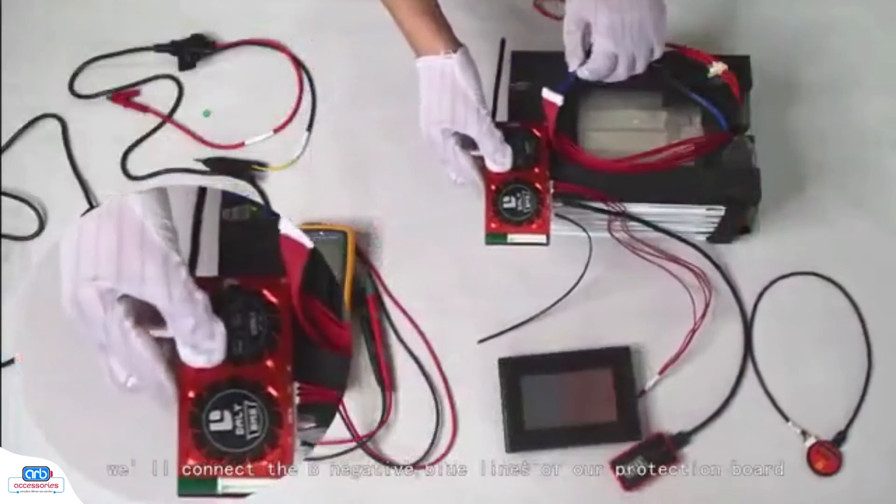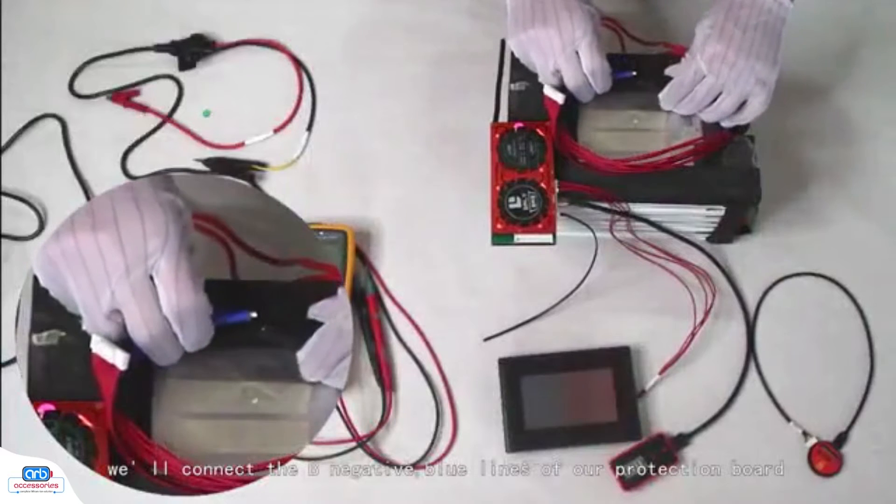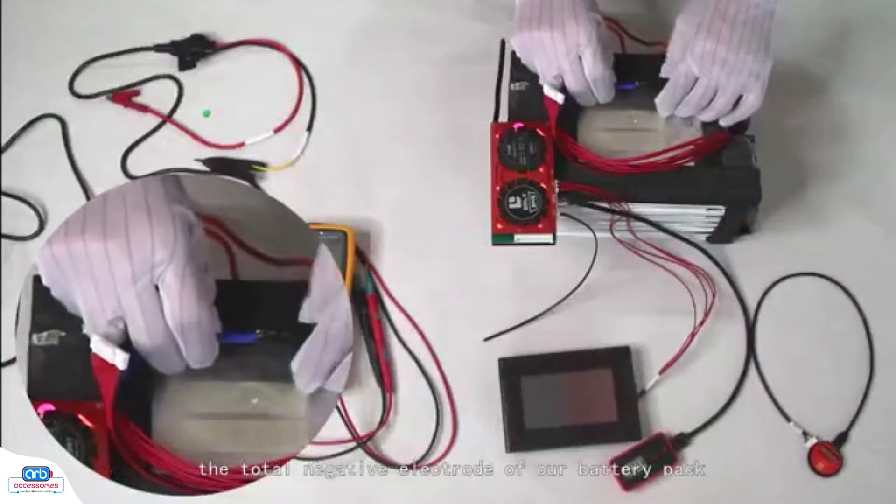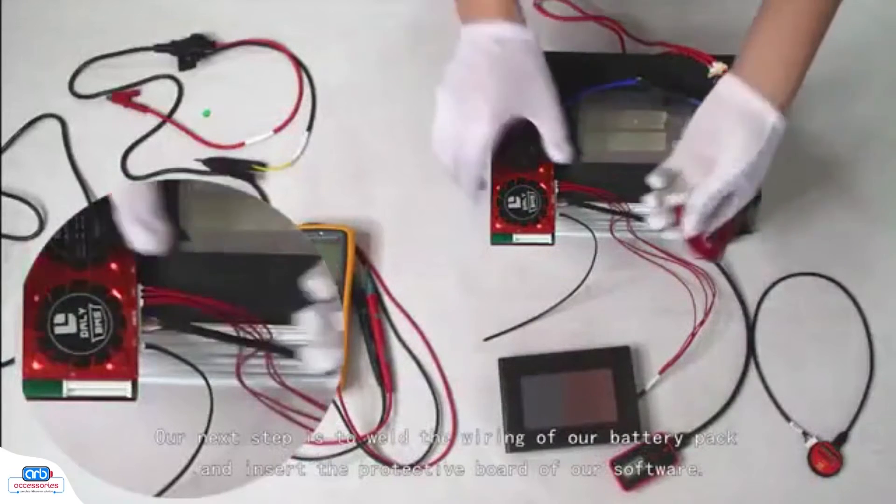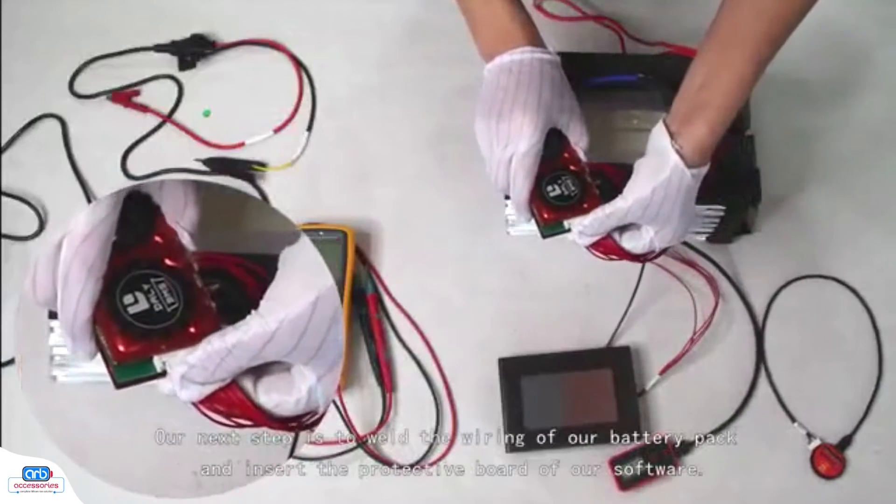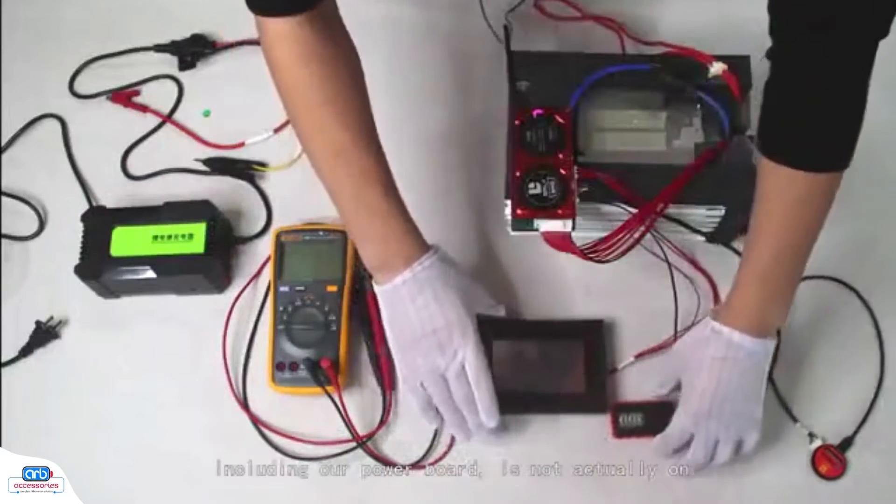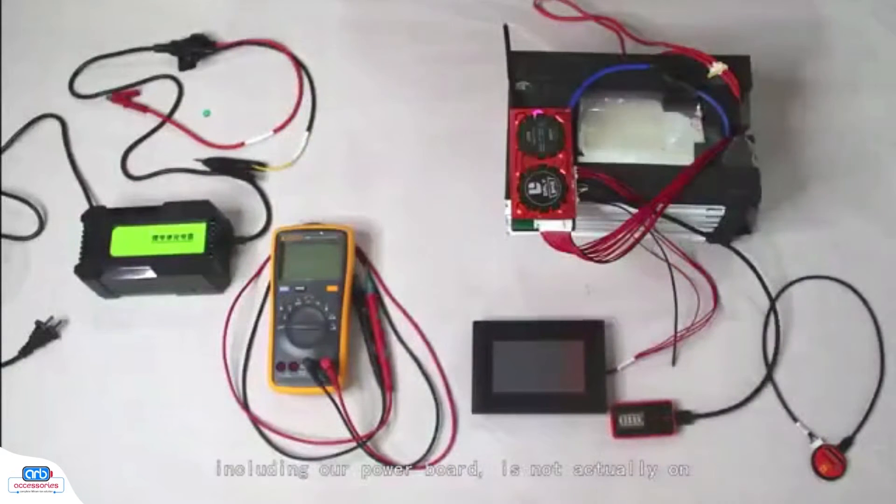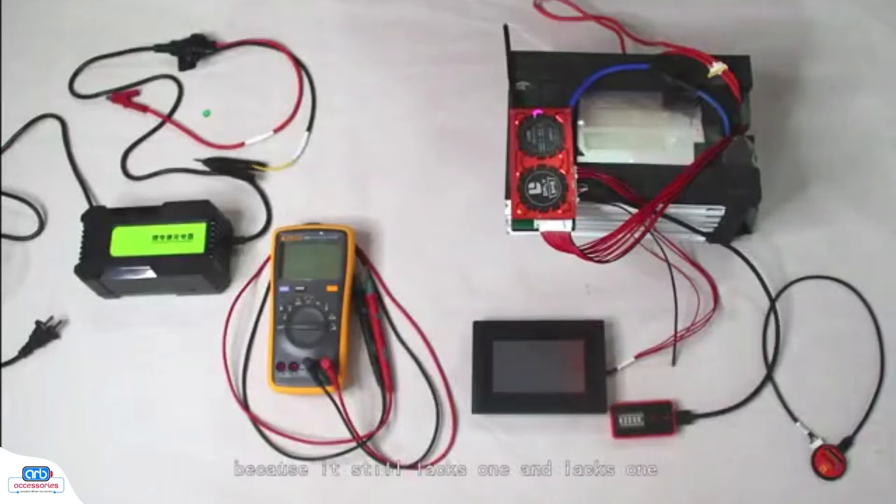We'll connect the B negative, blue line of our protection board to the total negative electrode of our battery pack. Our next step is to weld the wiring of our battery pack and insert it into the protective board. At this time, you can see our display screen, including our power board, is not actually on. This board is actually unable to discharge normally at this time because it still lacks an activation process.